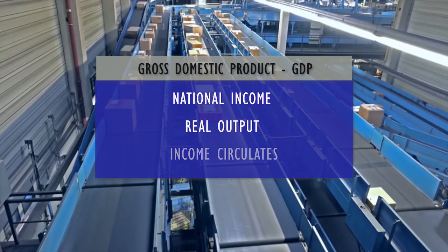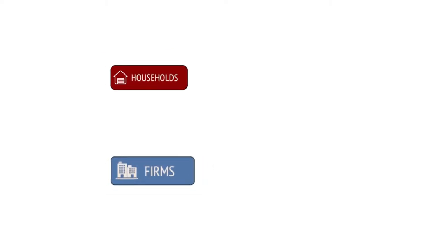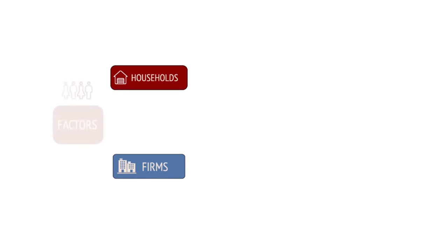Income in an economy circulates between its two key sectors, households and firms. Let's see how. Households supply factors of production to firms, including labour, capital, land and enterprise.